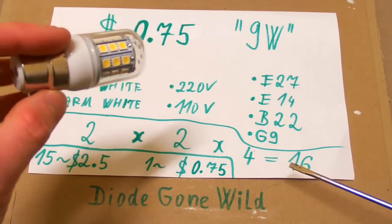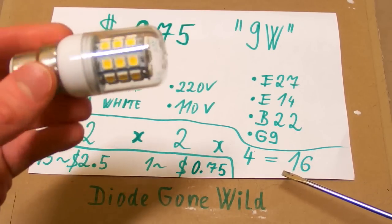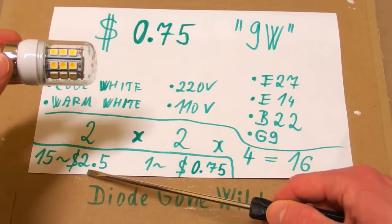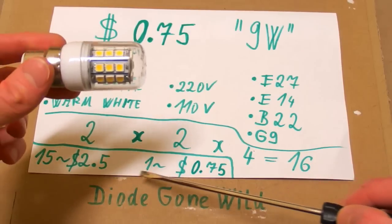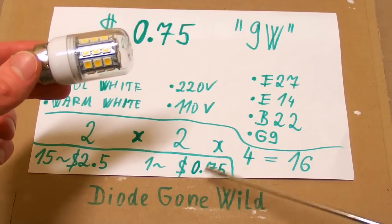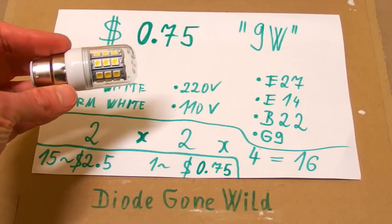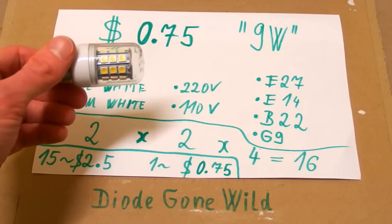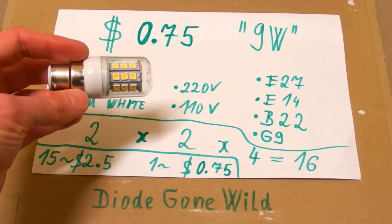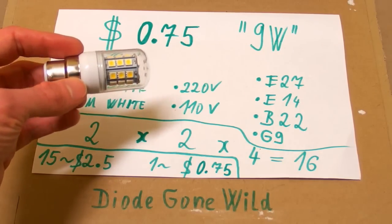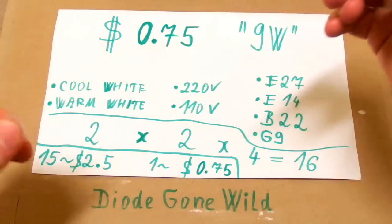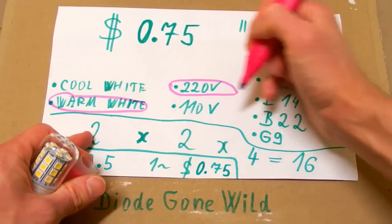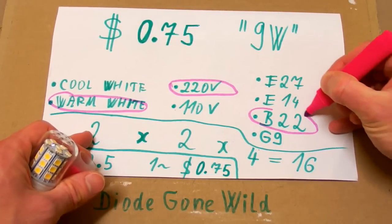And those are just different options of the same LED in fact. And out of those 16 options, 15 of them cost 2.5 dollars and only one combination cost 75 cents. So there is usually one super cheap option in the listing and the sellers do this trick because if you sort the listings the cheapest first, they will get to the top of the search results. And in this listing the secret combination was the warm white in 220 volt version and B22 socket.